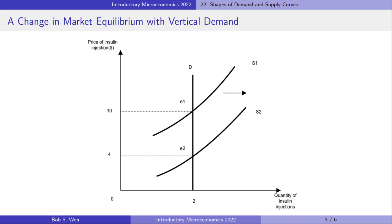Let's take a look at how the shift in the supply curve affects the equilibrium price and quantity when the demand curve is vertical or horizontal. Take the insulin injection case as an example. As illustrated in the supply and demand diagram, the patient demands two insulin injections at the original market equilibrium E1, and pays $10. Suppose that a technology advance lowers the cost of insulin — the supply curve shifts to the right, and the market reaches a new equilibrium E2. At the new equilibrium, the quantity is unchanged and the price drops to $4. So the shift of the supply curve will not change the equilibrium quantity; it only increases or decreases the equilibrium price.